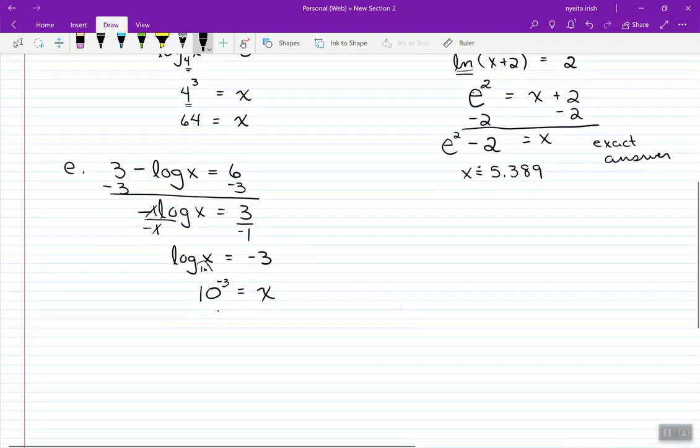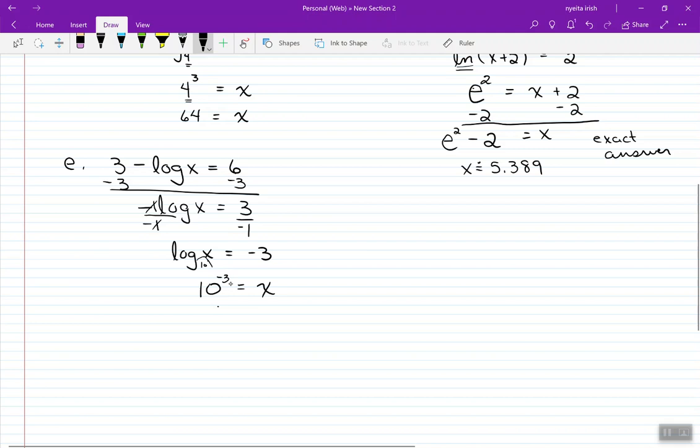We can simplify this a little bit. We're not keen on negative exponents. Drop 10 to the negative 3 down below the line. We did this with our laws of exponents. And then 10 to the 3rd, you can write up as 1,000. And that's your value for x.